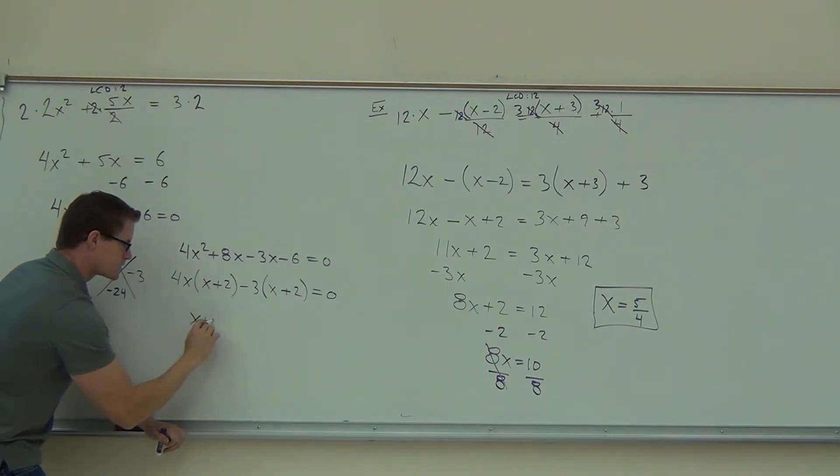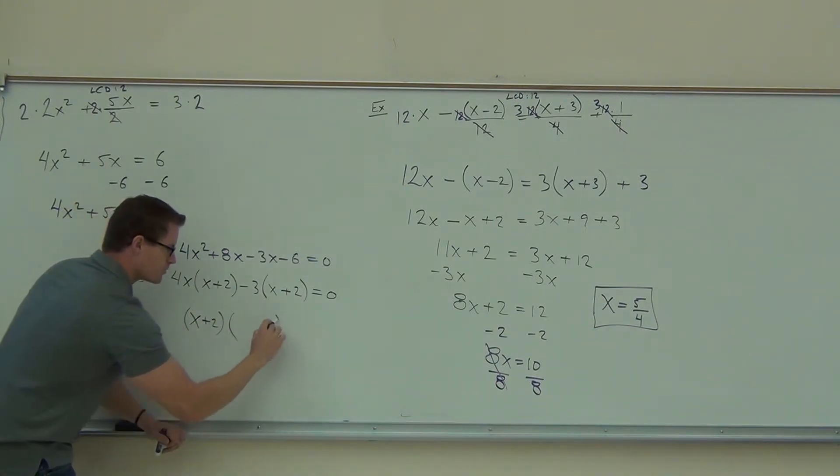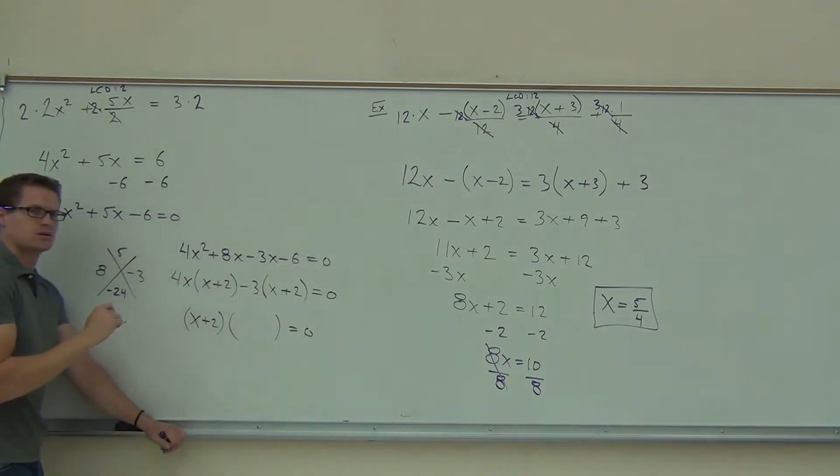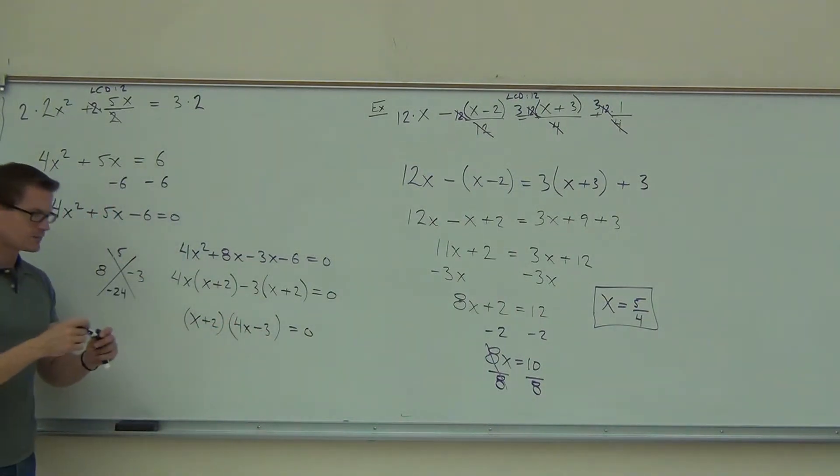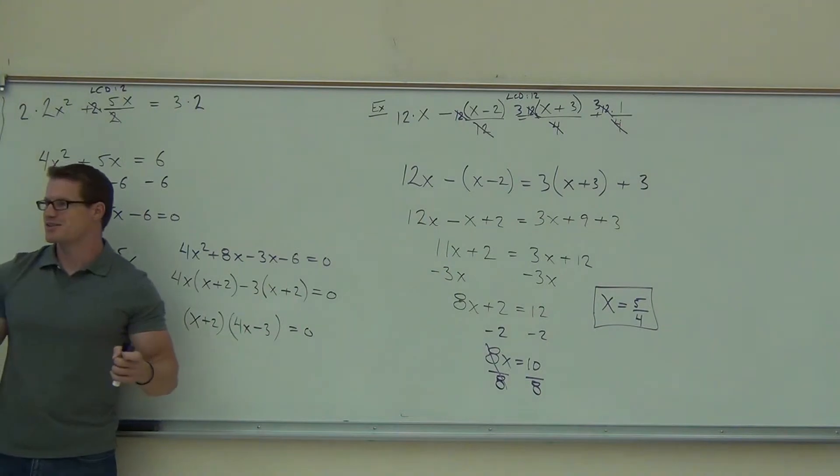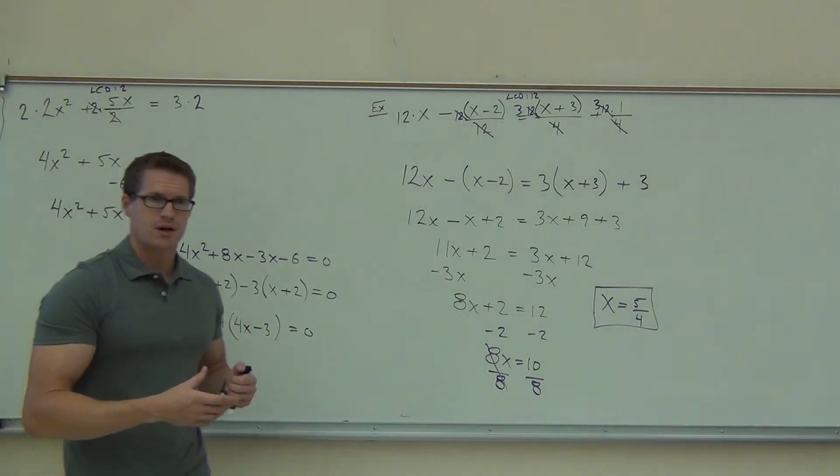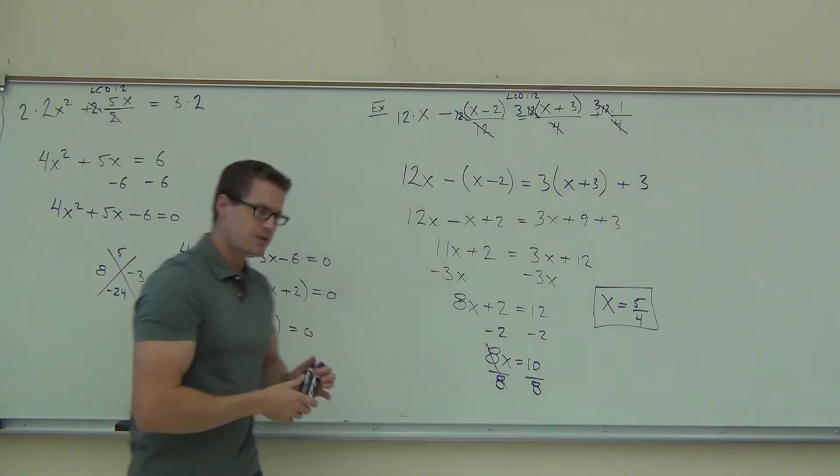Now we're going to factor out the x plus 2, and what are we going to be left with when we factor out the x plus 2? 4x plus 3. Perfect. Hey, we finally get a different case, right, where we can set each one of them equal to 0. Since these things are different, the zero product property works just fine for us.